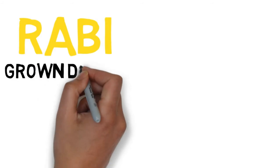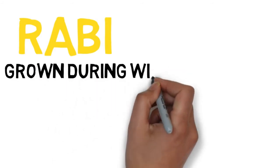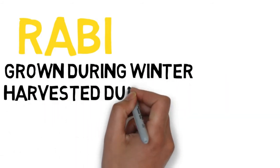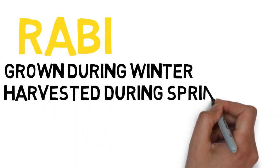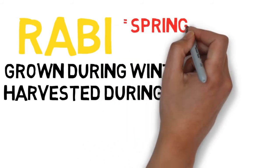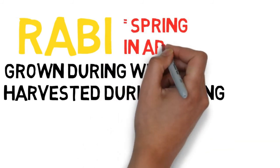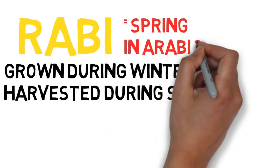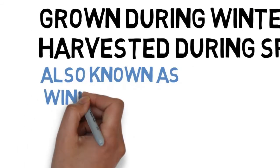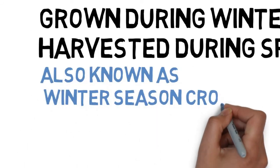Similarly, Rabi are the crops grown during winter and harvested during spring season. Rabi, which means spring in Arabic language, denotes the harvesting season of these crops. They are also known as winter season crops as they grow during the winter season.